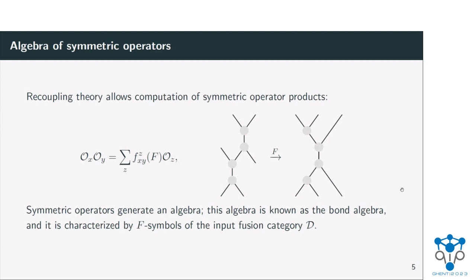Q: Can you use this formulation of the local operators to create something like a MERA that has these symmetries? A: Yes, indeed — this is just about symmetric tensor networks. I did it for Hamiltonians, but you can do it for partition functions or any tensor network with a symmetry, so MERA would also be an example of that. You could enforce something like Kramers-Wannier symmetry in the MERA.